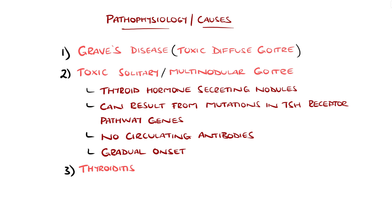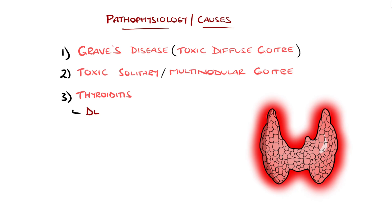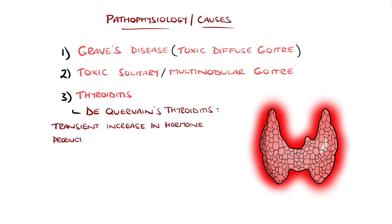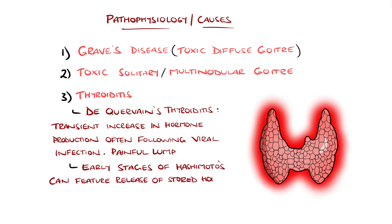Viral infections can lead to inflammation of the thyroid gland, causing a transient increase in thyroid hormone production, termed De Quervain's thyroiditis, typically featuring a painful lump in the neck. Additionally, in the early stages of Hashimoto's thyroiditis, there can be an initial release of stored thyroid hormone leading to thyrotoxicosis, before ultimately destruction of enough thyroid cells causes hypothyroidism.